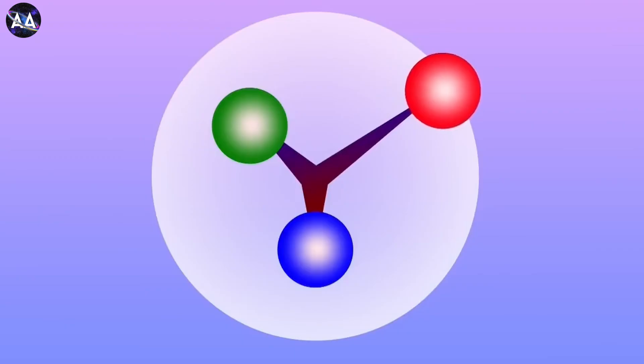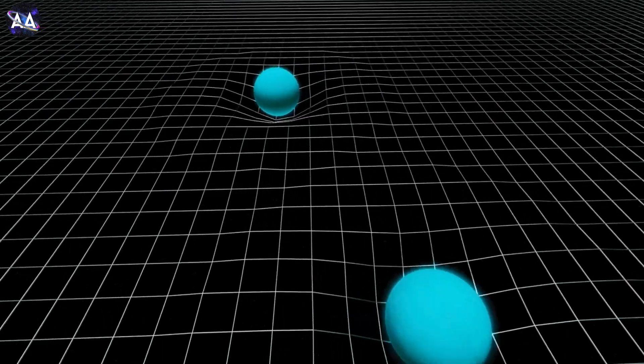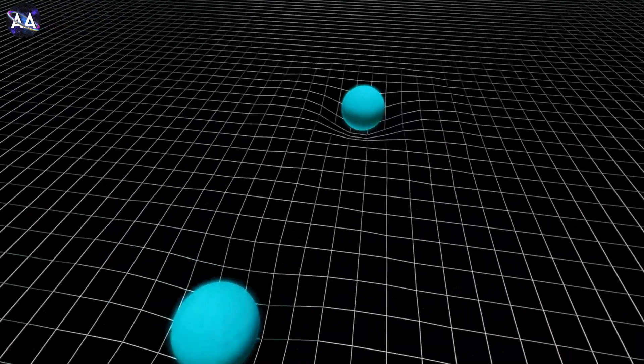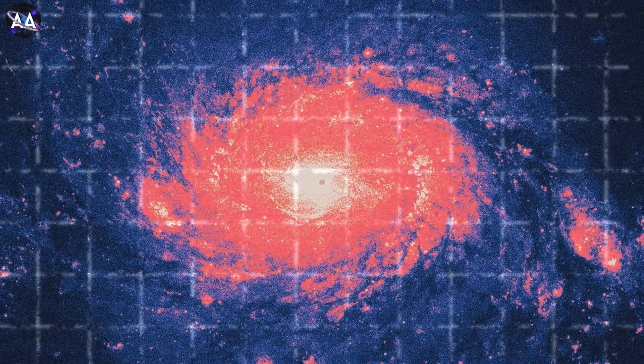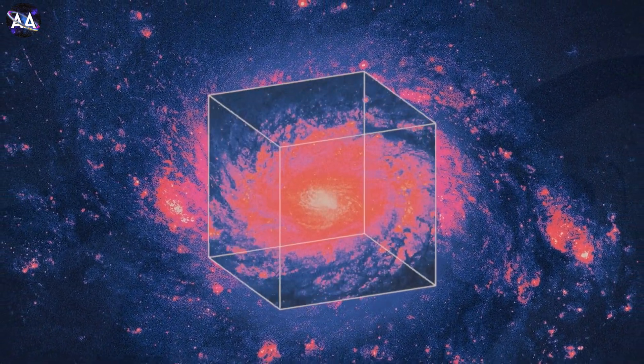You might be wondering, what about gravity? Strangely, the standard model doesn't include gravity. That's because gravity is explained by a different theory called general relativity. Particle physicists are working hard to combine these two fields into one unified theory.